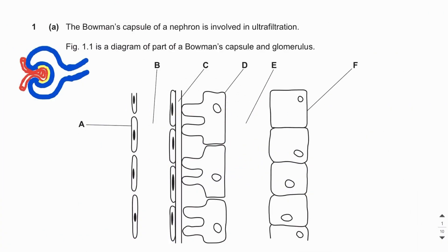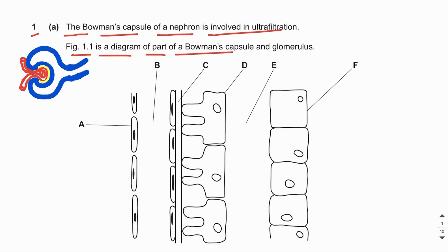Assalamu alaikum everyone. In this video lecture we will be discussing the topical past papers of the chapter homeostasis, which is part of A2 level biology 9700. Let's start with question number one. The Bowman's capsule of a nephron is involved in ultrafiltration. Figure 1.1 is a diagram of part of a Bowman's capsule and glomerulus.